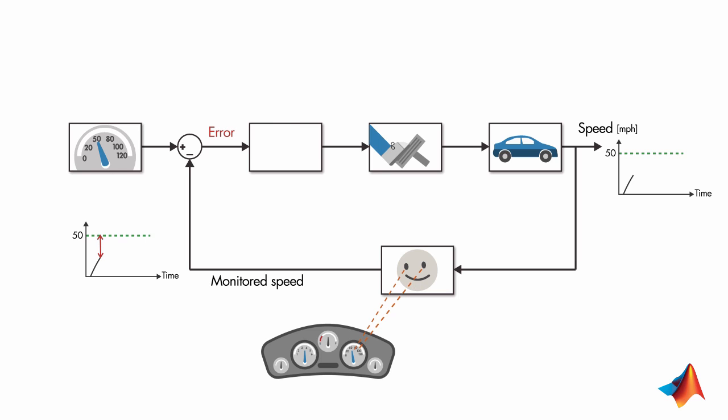Based on the error, you make a decision. In this case, the error is not zero, therefore you decide to apply more gas to get to your desired speed. And this in turn influences the speed of the car. The smaller the error gets, the less gas you apply. And once you get to the desired speed, you keep your foot still on the gas pedal to maintain your speed.